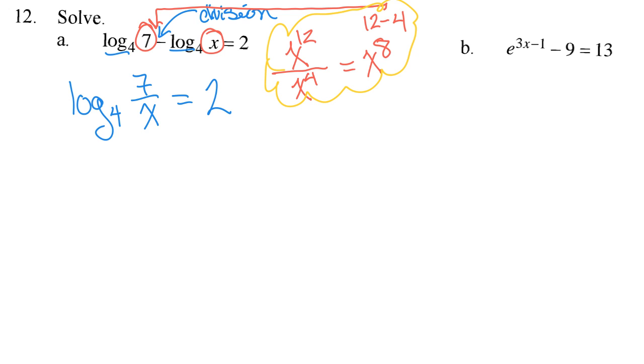I have log on one side. And so what undoes a log, changing it to exponential form? So we're going to swoop and loop. So we start with the first thing we get to, which is the 4. So it's going to be 4 to the exponent of 2 is equal to 7 over x.